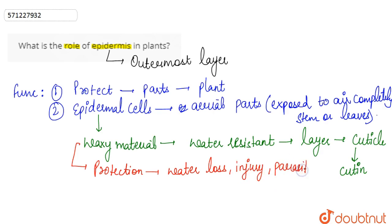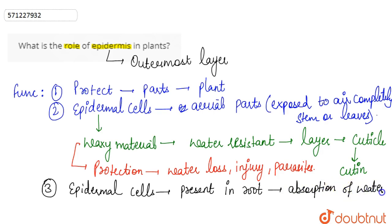The third function of epidermal cells is that the epidermal cells present in roots help in absorption of water. They absorb water which can then be transported to other parts of the plant using the xylem and its constituents.